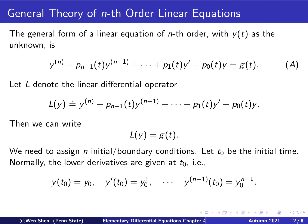Here we have an nth-order equation, so we need to assign n initial or boundary conditions. Let t_0 be the initial time. It is very common to assign n initial conditions, where the lower derivatives are given at the initial time t_0. Writing this out explicitly gives n conditions: y(t_0) is given, y'(t_0) is given, all the way to y^(n-1)(t_0) is also given.